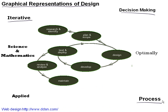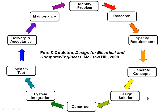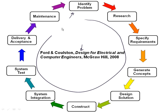Another visual representation is one where you start out researching and identifying something, plan and scope a problem, then design, develop, test, and deploy iteratively — that's where the circle comes from — then review and analyze, and maintain what you have at the end. One of the books I teach design from is Ford and Colston's Design for Electrical and Computer Engineers. Here we start off by identifying a problem, researching it, specifying requirements, generating concepts, designing solutions, and so on, where you get this large circle of steps that, if you go through multiple times, would be iterative.